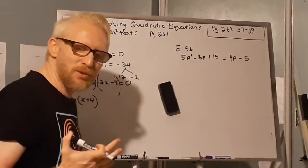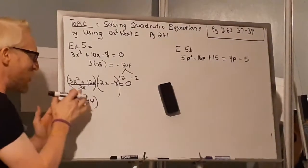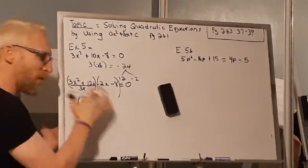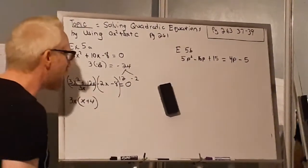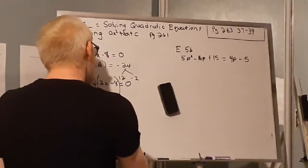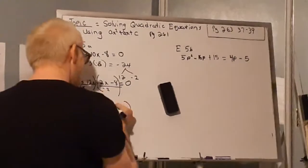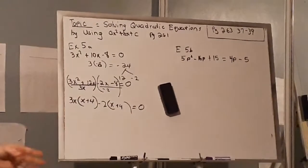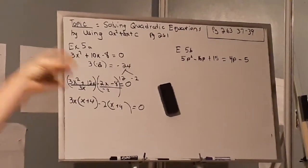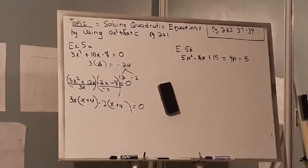Pardon my neighbor's dogs — this is a new reality and they're just excited about math. Anyway, going back: I found the common factor between 3x² and 12x, which is 3x. Now I'm going to look for a common factor between -2x and -8, and it's actually -2. So I divide everything by -2: -2x ÷ (-2) = x and -8 ÷ (-2) = positive 4, giving me (x + 4) equals 0.